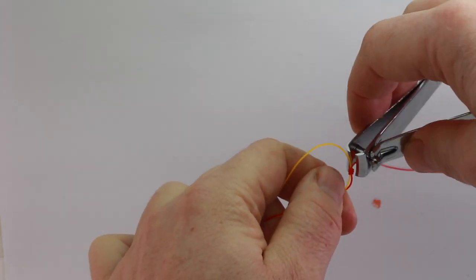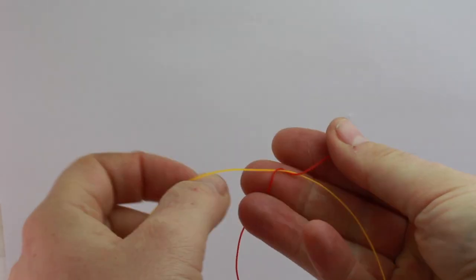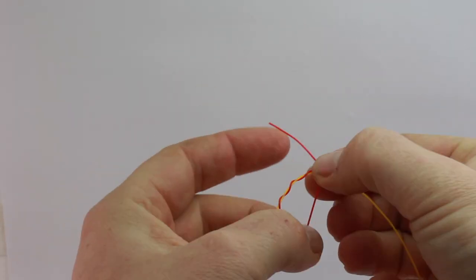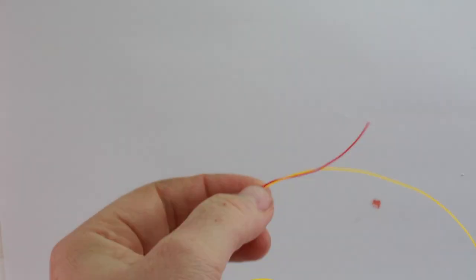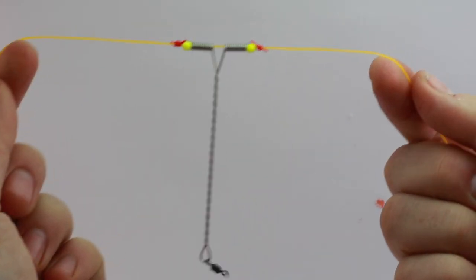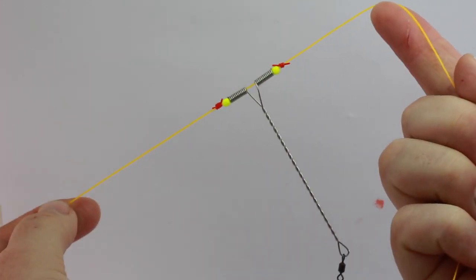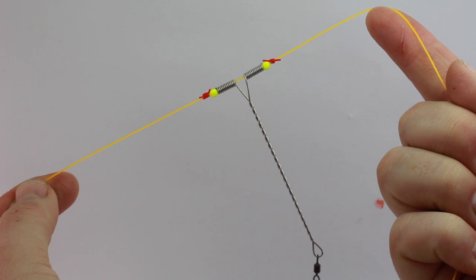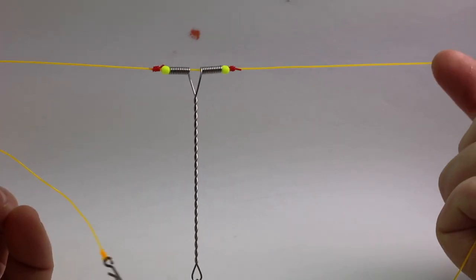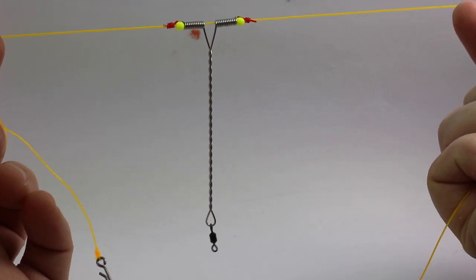And then you want to basically just go along the whole rig and tie in the booms where you want them, like that. Now that will actually slide because you're using the power gum. So put one right near the weight, then I put one right up the other end near the swivel for the main line, and then one halfway along, so equidistant really.